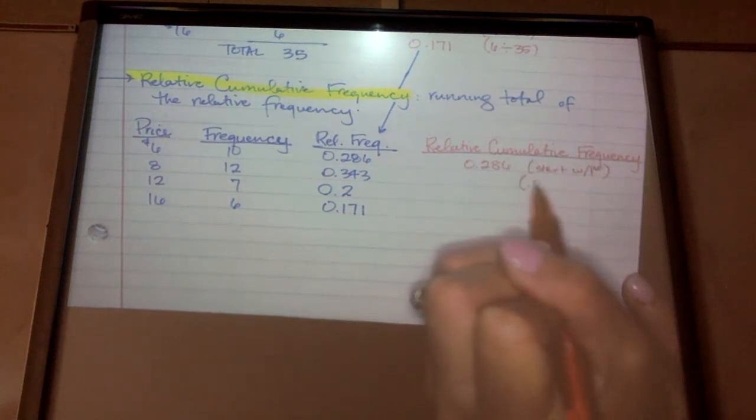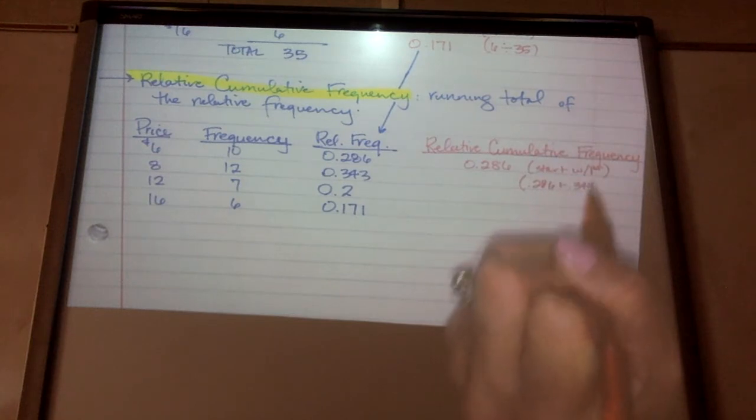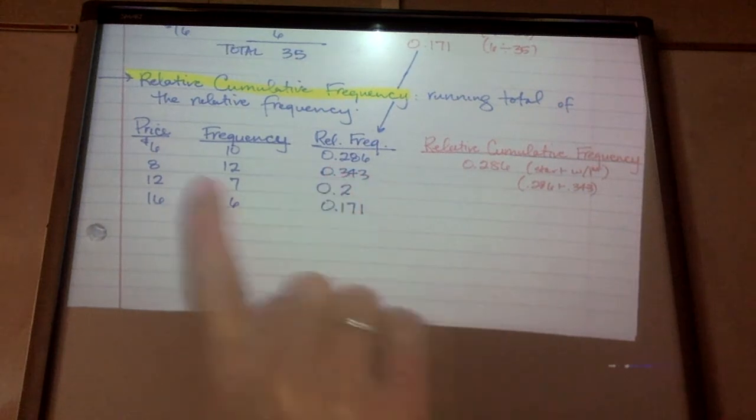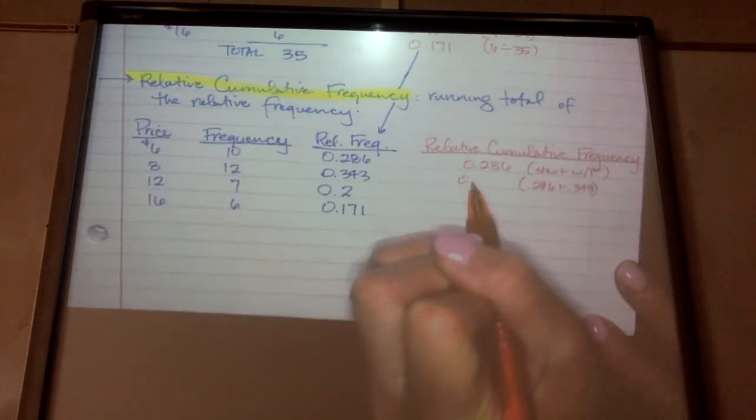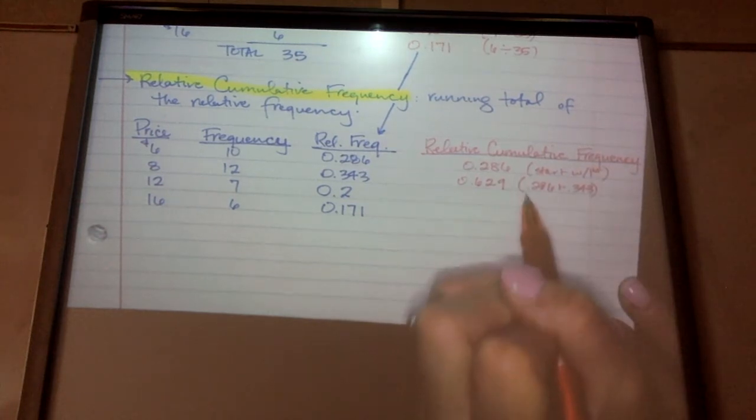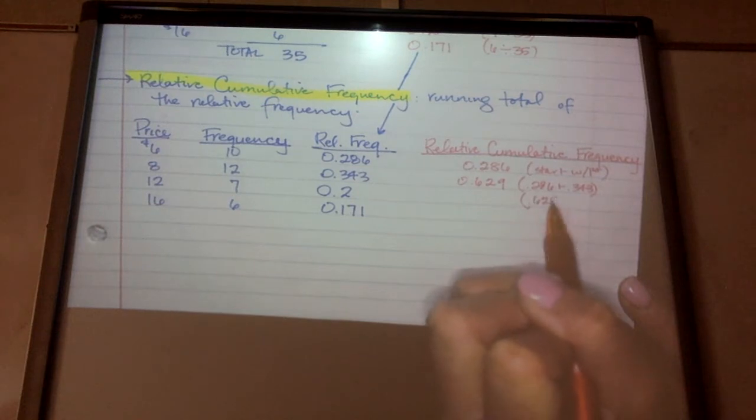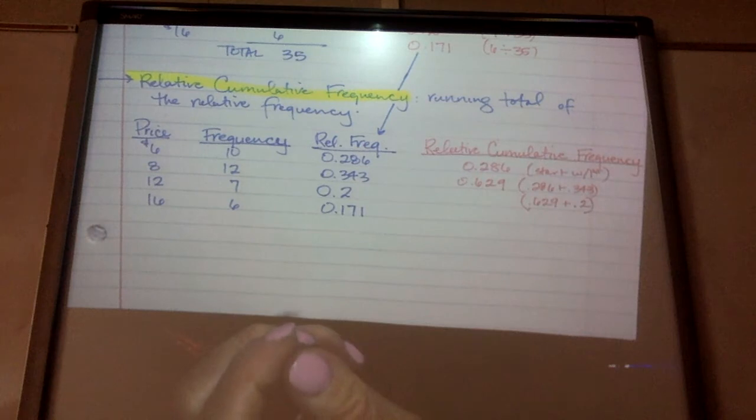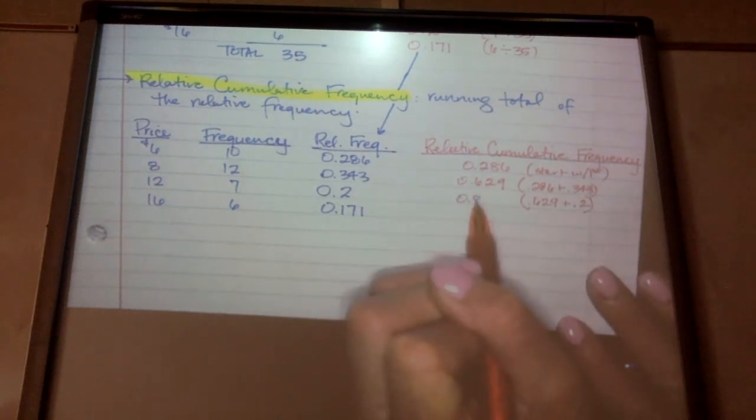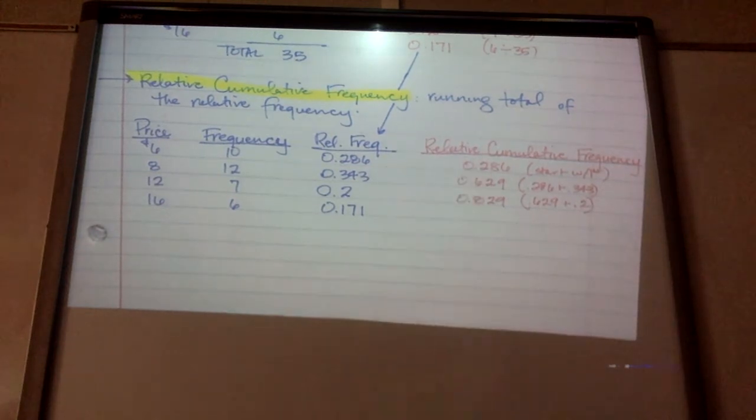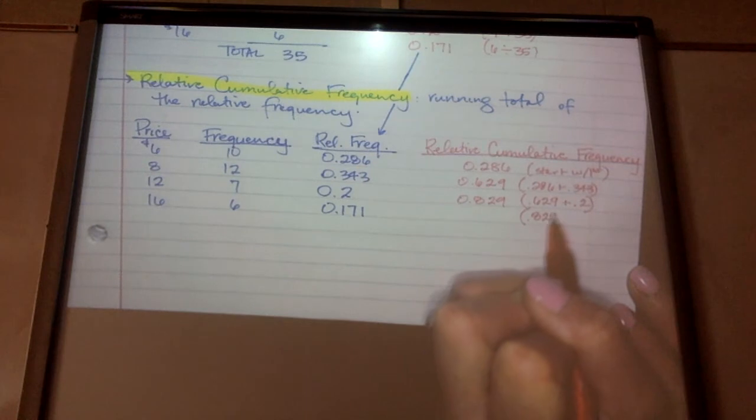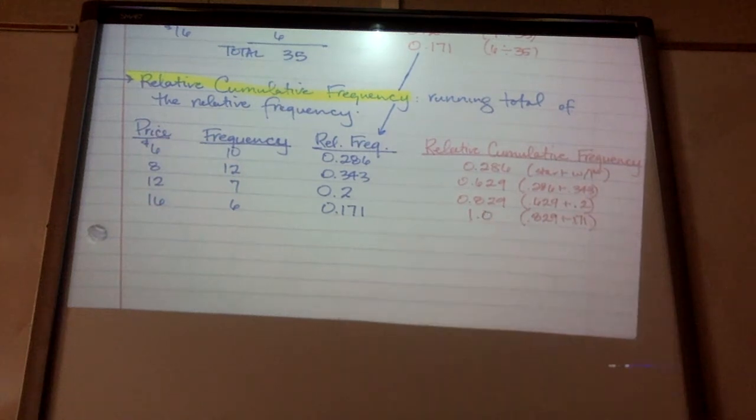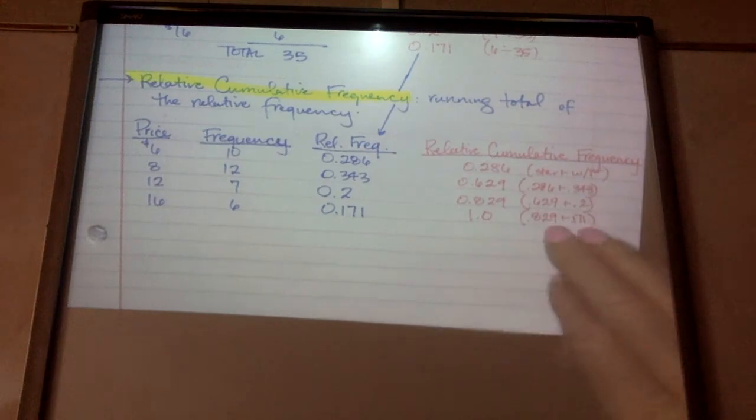This next one should be the previous item plus the current item. So I'm adding the previous to the current because I'm in this row here. So 0.286 plus 0.343, and I end up with 0.629. Now I'm going to take, in this next row, I'm going to take the previous amount, 0.629, and add the current amount. So 0.629 plus 0.2, and I get 0.829. And by the way, you don't need the 0 before the decimal. It just tells you the ones place is valued at 0. And in this last one, I'm going to take the previous item plus the current item, and that should give me 1.0.